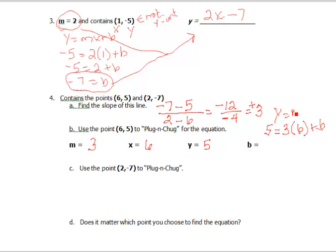y equals mx plus b. So 5 equals 18 plus b, and if we subtract 18 from both sides, we should get negative 13.